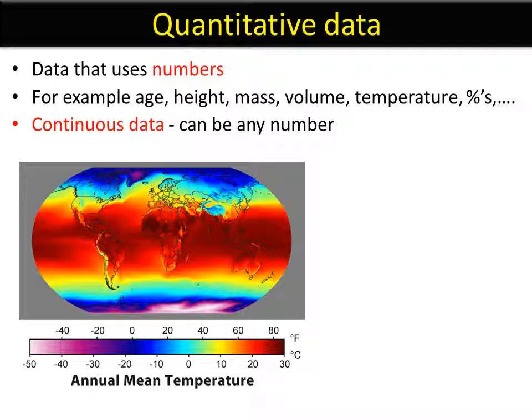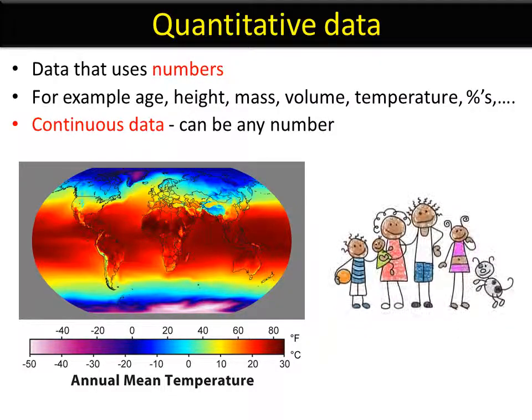The only time data would be a number but not be continuous would be for something which has to be a whole number. For example, the number of siblings you have - you can't have a quarter of a brother, or a number of pets - you can't own minus 0.25 of a dog. That would be discrete numbers. But continuous data can be any number, plus or minus, or with a decimal point, and it's a type of quantitative data used as numbers.